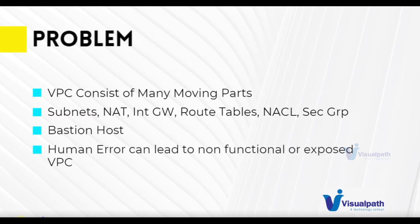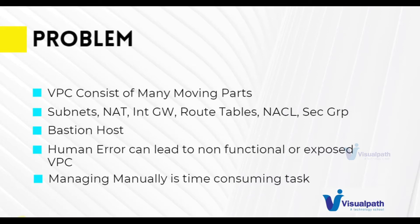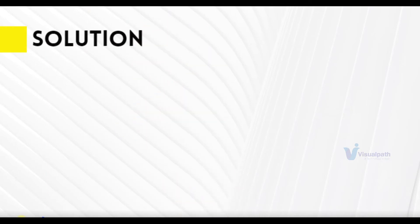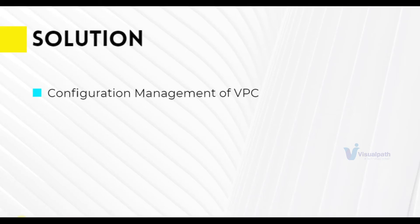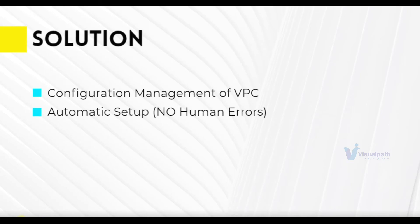If you're doing such things manually, there is always a chance of human error — a typographical error or some configuration misfire. Because of these human errors you may have a non-functional or an exposed VPC that is publicly accessible on the internet. Also, managing all these things is a time-consuming task. If everything is happening through the console or even CLI, it's really difficult to track all the changes.